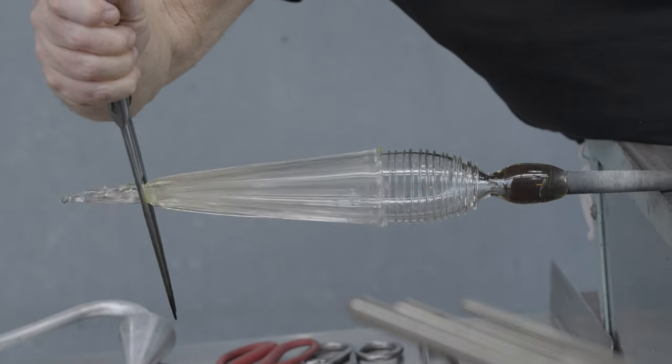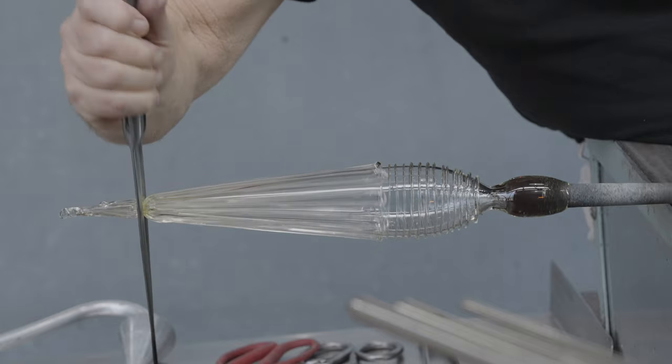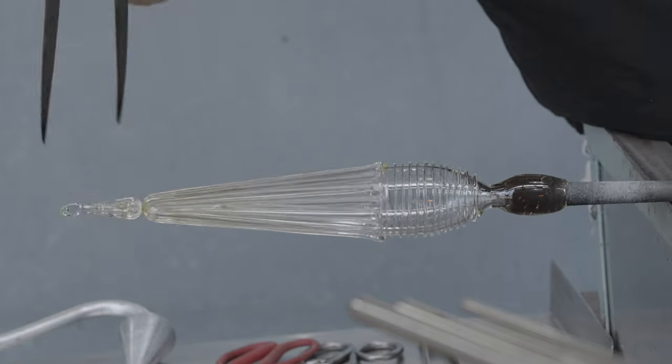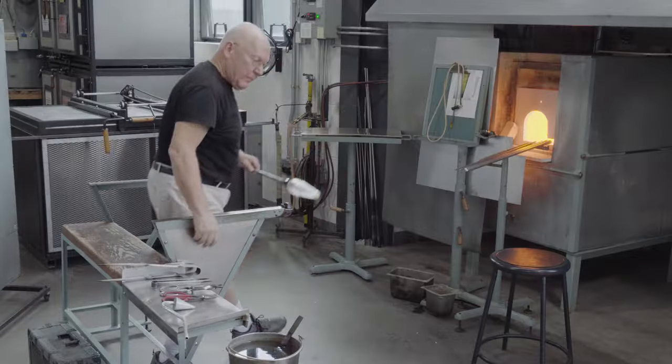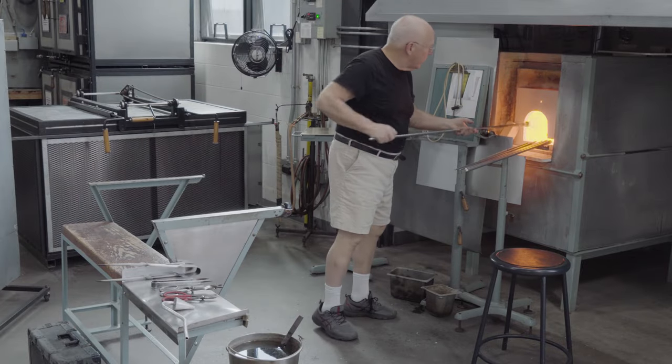The excess glass is trimmed from the tip of the vessel. And the bottom is reheated and flattened.